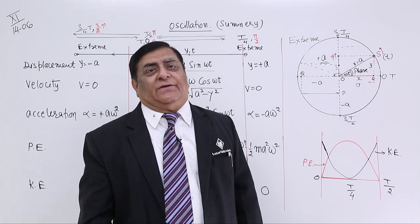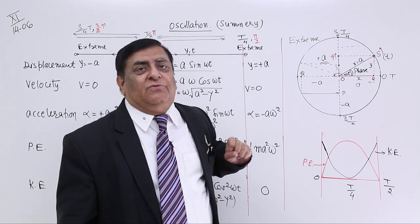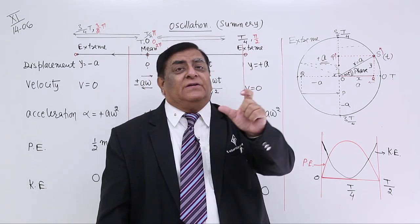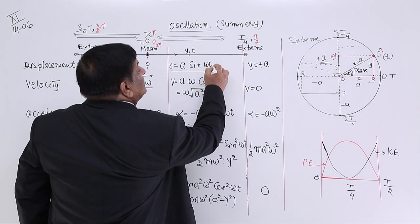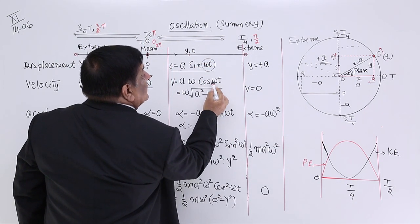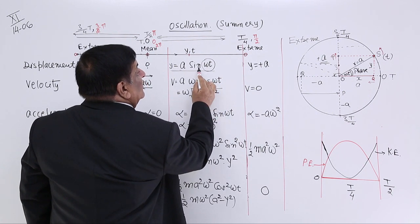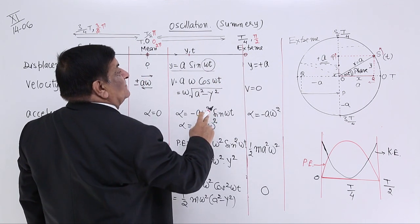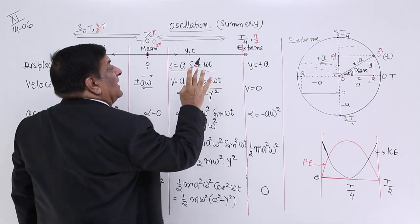The phase appears in all the equations of oscillation after the sine function. For example, y = A sin(phase). The angle of the trigonometric function gives the phase. Please remember: this angle is the phase.